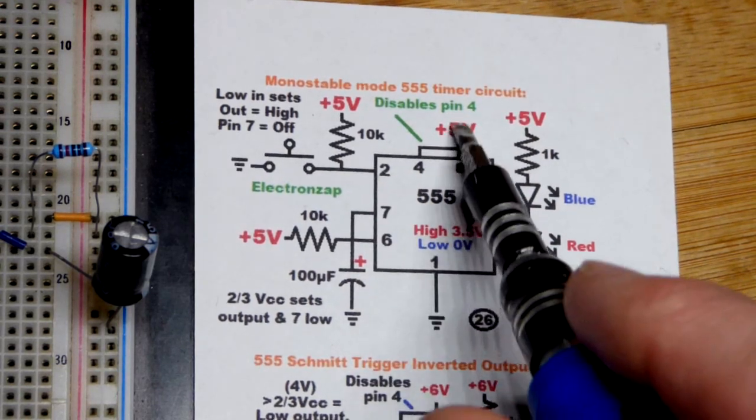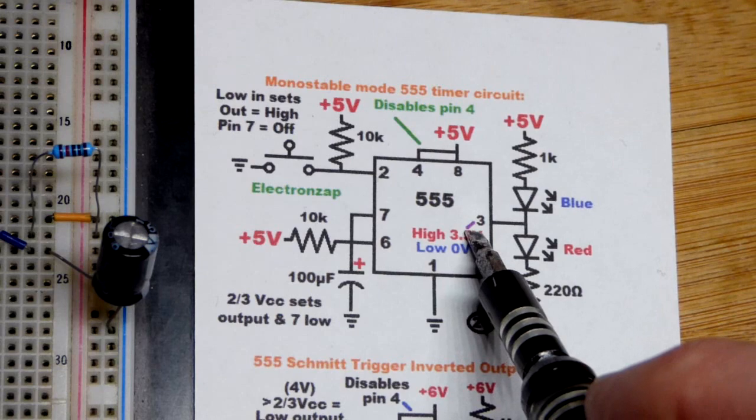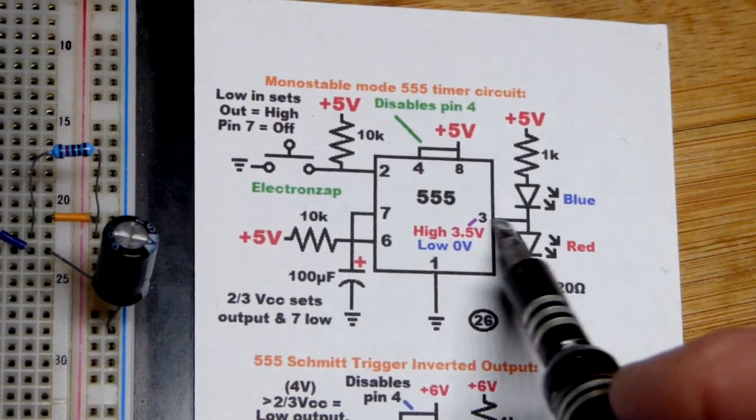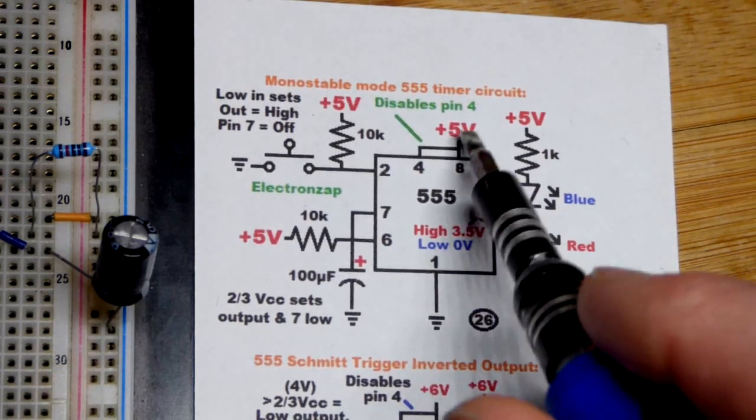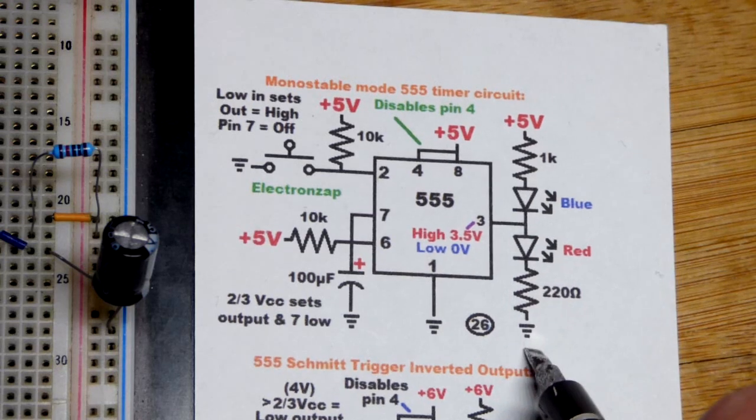That sets the output high. It doesn't get the full 5 volts because there's some transistors that drop it, but 3.5 volts—if you got 5 you lose about a volt and a half. Red LED will light up.